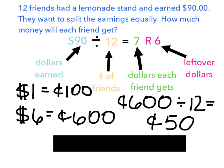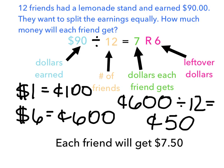That helps me out a lot because I know that my friends, the 12 friends each got $7, and now they're getting an additional 50 cents. So if I want to put that all together, I can say that each friend will get $7.50.